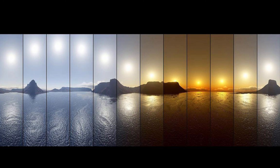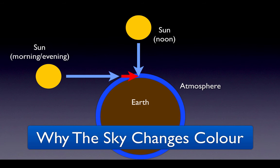This gives us a red sunrise and sunset. In the afternoon, the sun is directly overhead. The light passes through less atmosphere, so more of the shorter blue wavelengths get through, giving the sky the appearance of being blue. It is very important to remember that the color of daylight changes throughout the day.